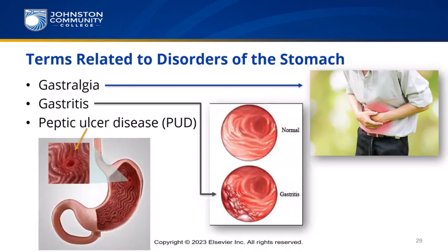Terms related to disorders of the stomach: Gastralgia — algia means pain — is stomach pain. Gastritis — -itis means inflammation — is inflammation of the stomach. Another term for gastralgia is gastrodynia — dynia also means pain. Peptic ulcer disease gets its name from peptic, meaning pertaining to digestion. It is a type of erosion of the mucosal lining of the GI system, occurring often in the stomach or duodenum.